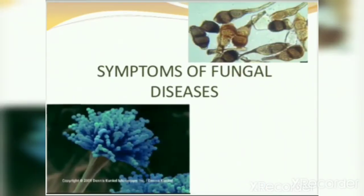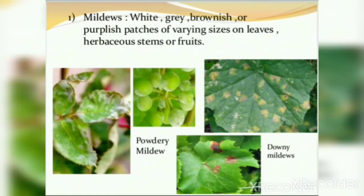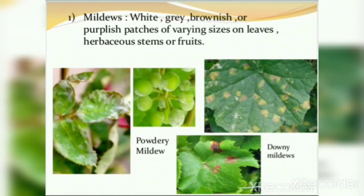Now the symptoms of fungal disease. First is mildew — white, grey, brownish, and purplish patches of varying size on a leaf, herbaceous stem or fruit, especially on vines and cucurbits. There are two types: downy mildew and powdery mildew. Powdery mildew is white, slightly grey, and sometimes brownish or purplish. Patches differ according to leaf condition.